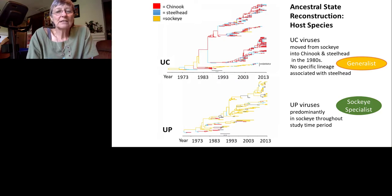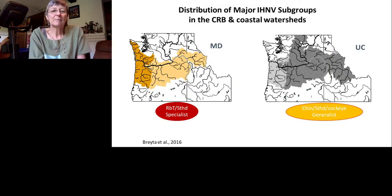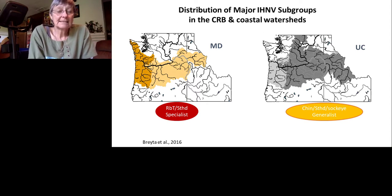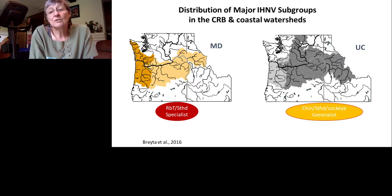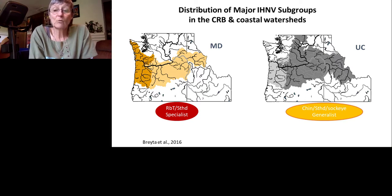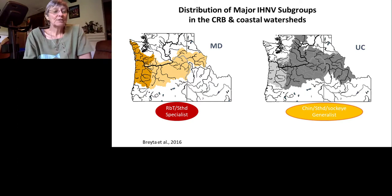Spatially, the Columbia Basin is an overlap zone of both M and UC viruses. The M specialist for rainbow trout and steelhead occupies the lower Columbia Basin and coastal watersheds, while the UC generalist overlaps that same region extensively. This means that in the same location in nature, a specialist and a generalist lineage of IHN co-occur. And in steelhead in this region, that host is being infected by both specialist and generalist viruses simultaneously.